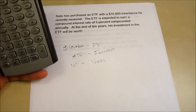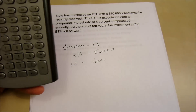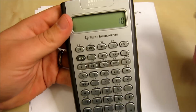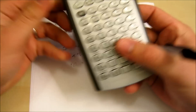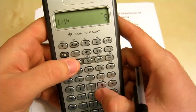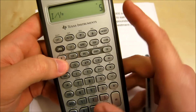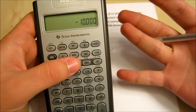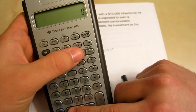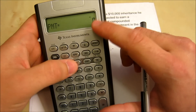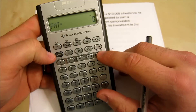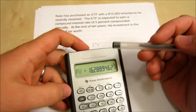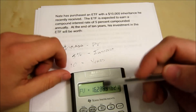We enter everything into the time value of money on the calculator. N = 10 for the duration. Interest rate = 5, hit I/Y. The present value is $10,000 — we make that negative because it's a cash flow out of our pocket. Double-check that zero is in the payment key. Then hit CPT and then FV to compute the future value. The result is $16,288.